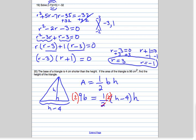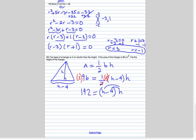So these two cancel. We get 192 equals h minus 4 times h.